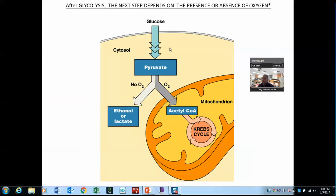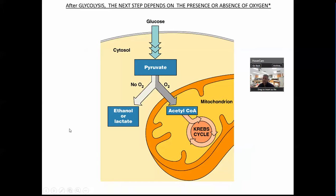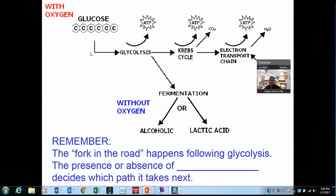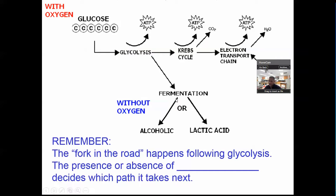Now we went this pathway in the previous video. Now we're going to go this pathway. And why is that important, and what's the significance of being able to do that? This was in the previous video — we went down this way. Now we're going to say, what happens when oxygen is available? If I were to draw a circle around here, that would represent the mitochondria.